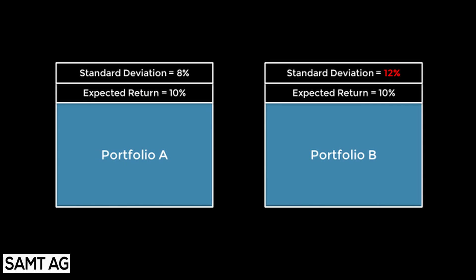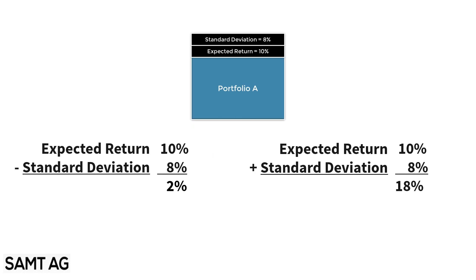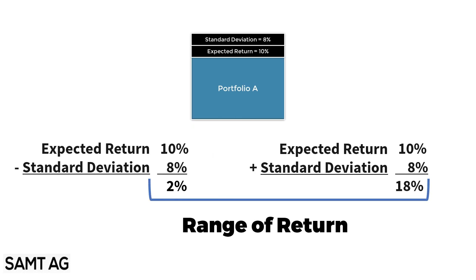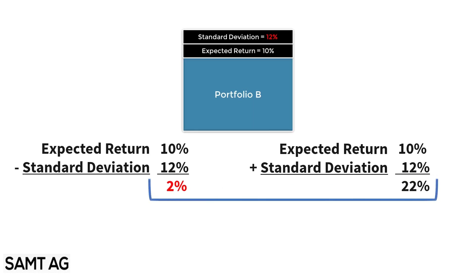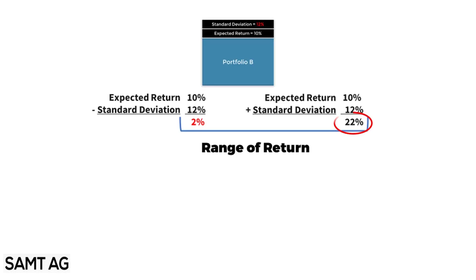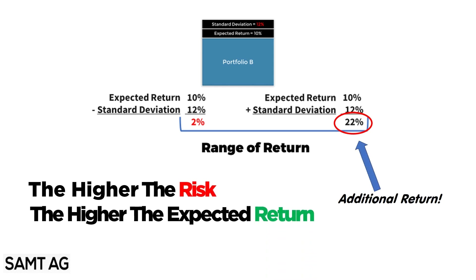But if you're adventurous, you might say: portfolio A can return between 2% and 18%, while B can give between minus 2% and 22%. So you might go with B. B offers a chance of getting 22% return, but there's also the possibility that instead of making gains, you might end up losing money. The additional return is compensation for additional risk.